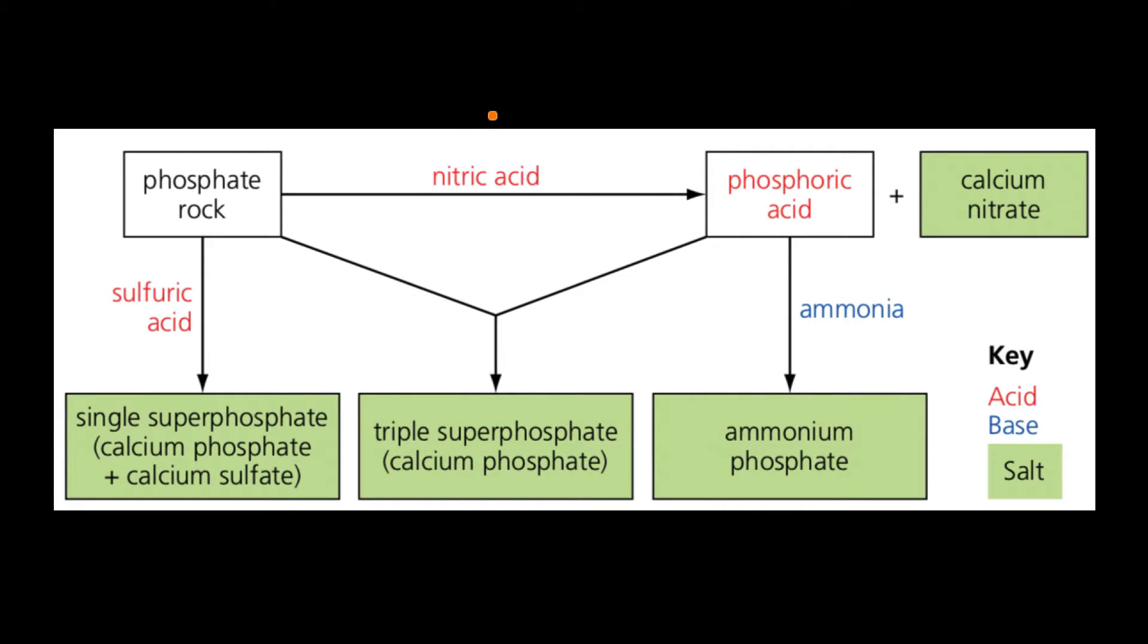Now moving on, we have this slightly more complicated looking thing, so I'm going to simplify it for you. First of all, this thing here, phosphate rock. Now this is an important substance which is mined. It contains phosphate, of course, it actually contains various phosphate minerals. And you don't need to know what those minerals are, so that is great. Now, first of all, phosphate rock can be used to produce one of the reagents again.